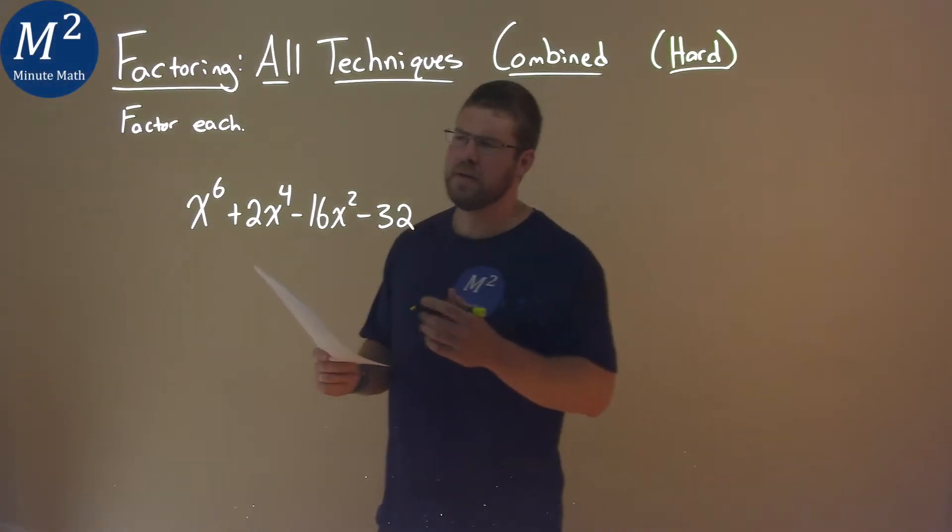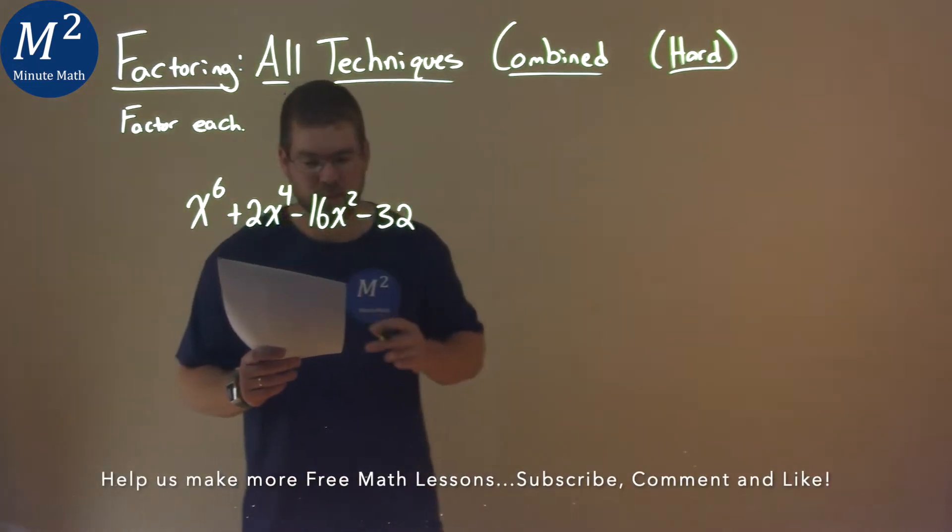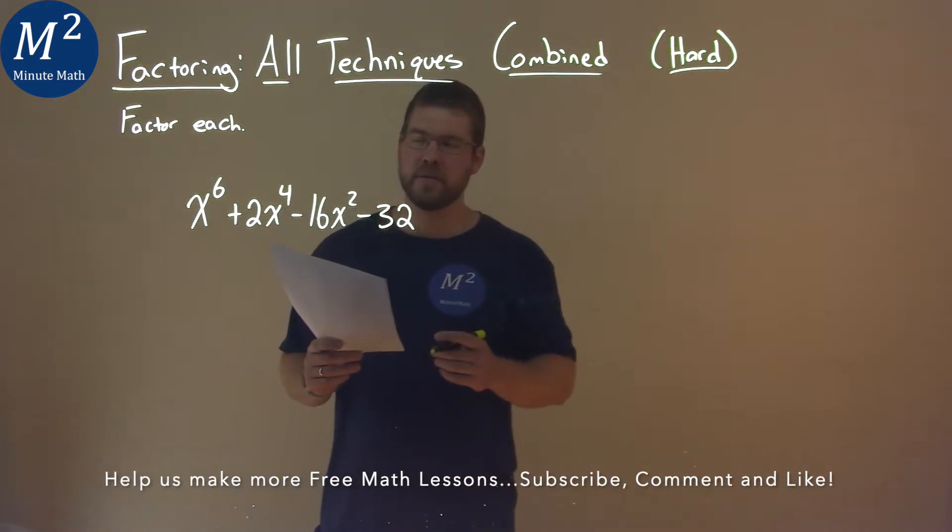We're given this problem right here, x to the 6th power plus 2x to the 4th minus 16x squared minus 32. And we've got to factor this completely.